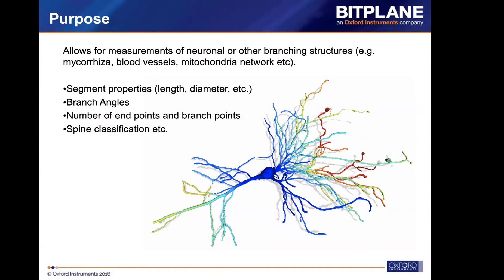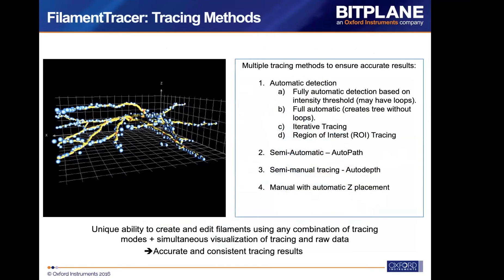The purpose of Filament Tracer is mainly to analyze filamentous structures such as blood vessels and mitochondria networks. If you want to measure the length, diameters, or branching points, Filament Tracer is the right tool. It gives you results in segment properties including branch angles, number of endpoints, branch points, and spine classifications.